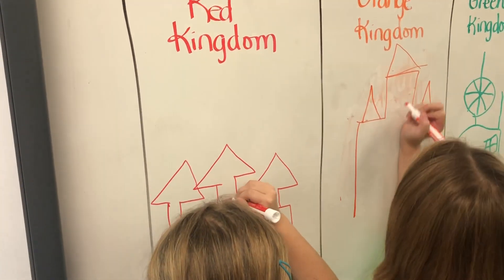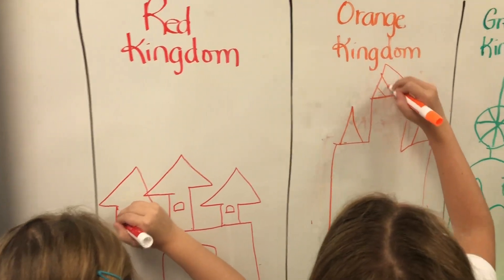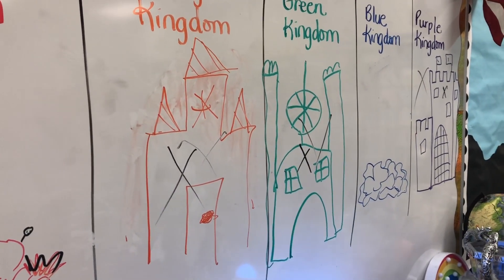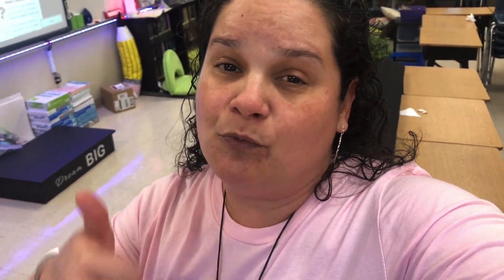It all starts by having students come to the board. I separated my class into different kingdoms — red, orange, green, blue, and purple. I chose a different student from each group and had them draw a castle in one minute. Then I gave the directions: I would call on teams randomly at random times to answer questions. If they got it correct, they got to put an X on an opposing team's castle. If incorrect, I put an X on their castle. The engagement went really high.